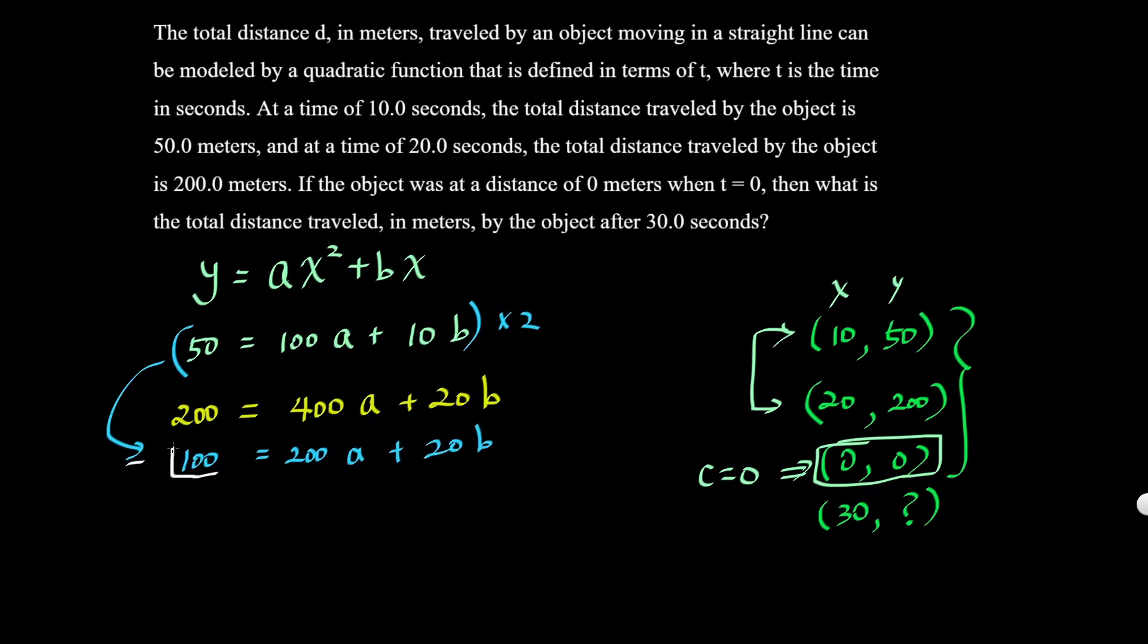If I subtract these two equations, we get rid of the b's, and we have 100 = 200a. Divide by 200, then a = 1/2. So we have y = (1/2)x².